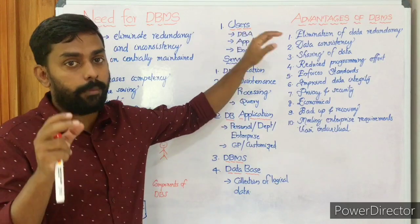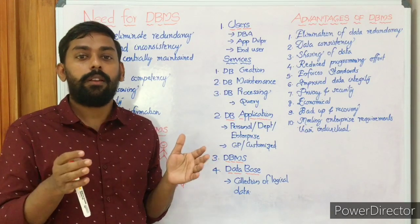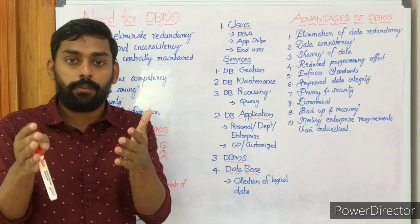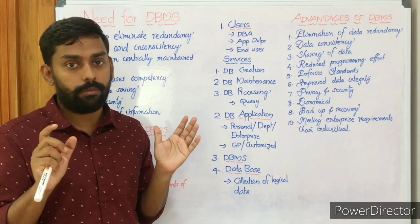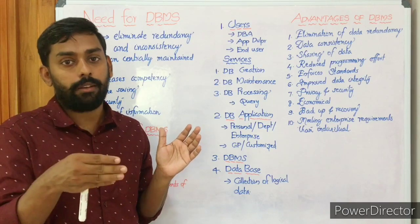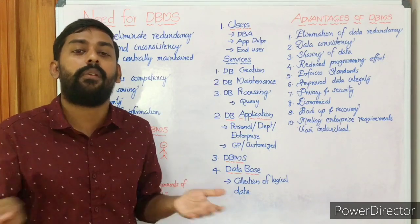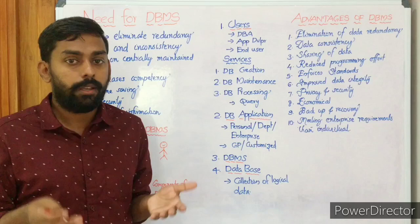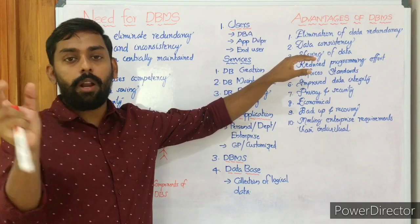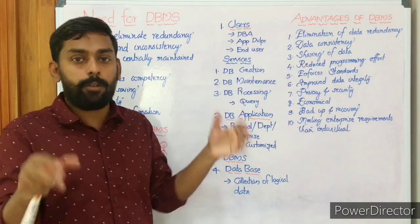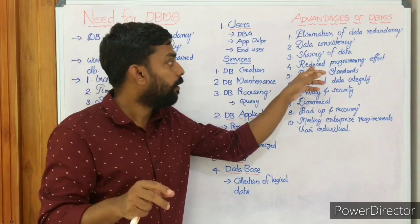Advantage 3 — Sharing of data: Since data is stored at a single server machine in a centrally organized system, all other machines can share that data over the network. Note that there may be hierarchy — not all users can access all information — but all machines can share the data stored at the server.